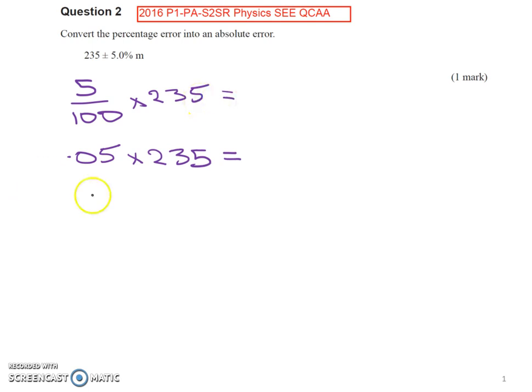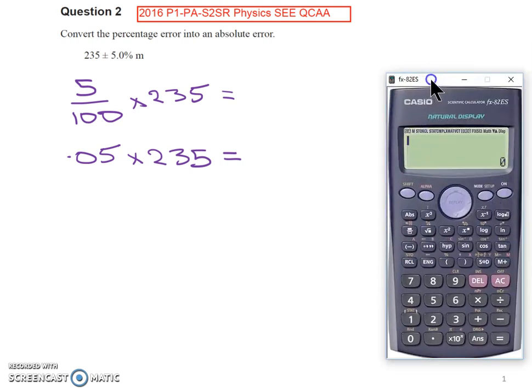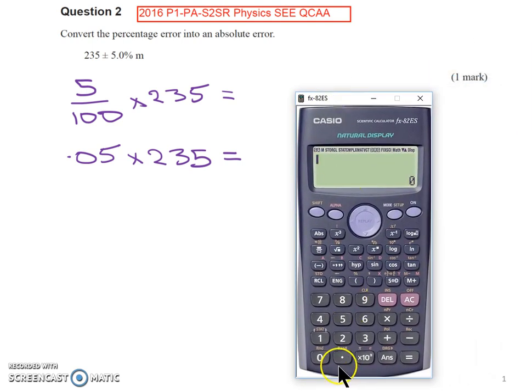Now we need to therefore do the calculation. Let me drag a calculator into the screen for you. So we're looking for 0.05 multiplied by 235. Equals 11.75.